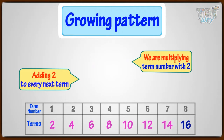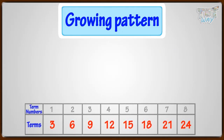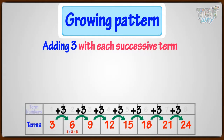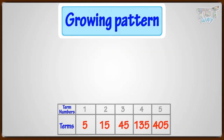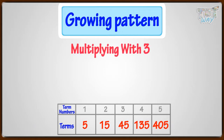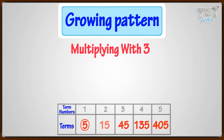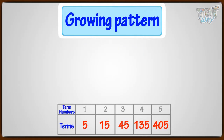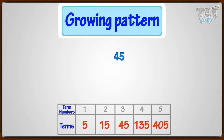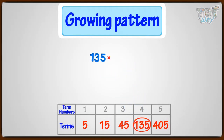Now have a look at more examples of growing patterns. This is an example of a growing pattern where we are adding 3 with each successive term. Here is another growing pattern where we are multiplying by 3. The first term is 5. The second term is the 1st term multiplied by 3. The next term is 15 multiplied by 3, then 45 multiplied by 3, and the next term is 135 multiplied by 3.